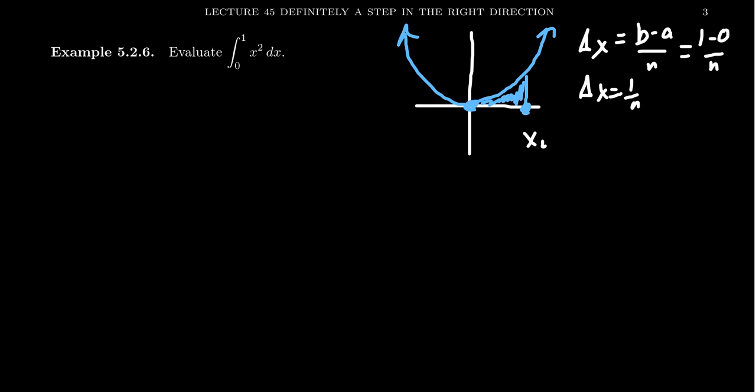Next, we need to consider the xi. This tells us how high the rectangles are going to be in the Riemann sum. The general formula for xi is a plus i delta x. And so plugging in the specific values, we get a is zero. We get that i is just a variable to be dealt with later. And delta x from before is one over n. So we get that. And so simplifying that xi will just become i over n.